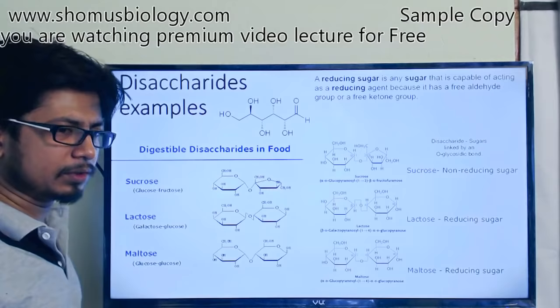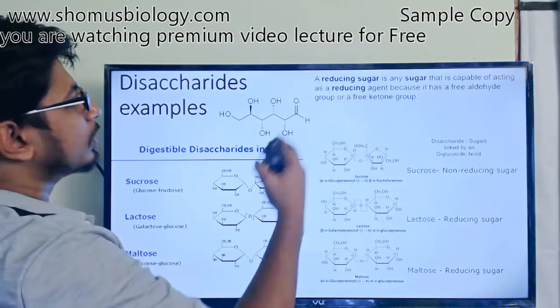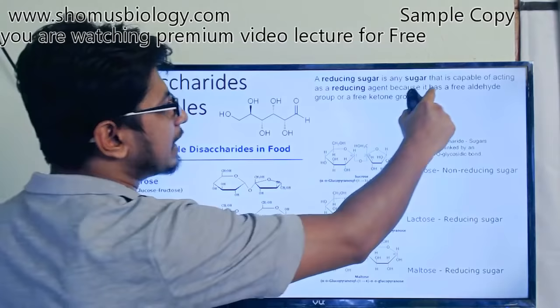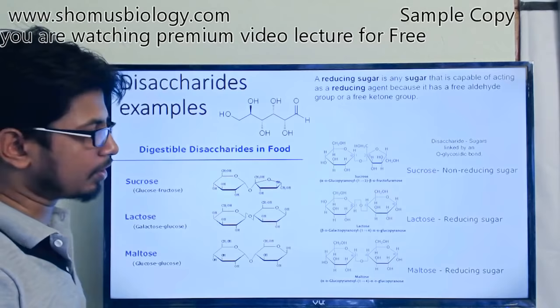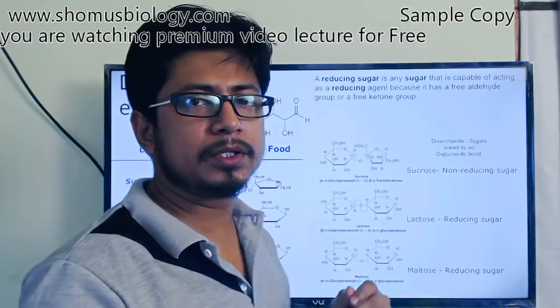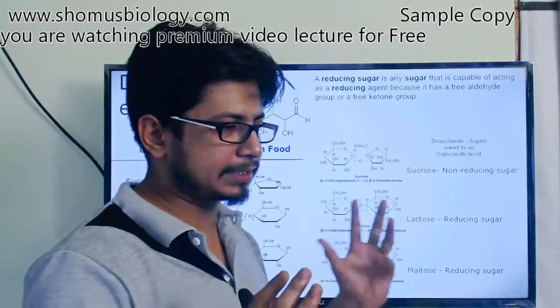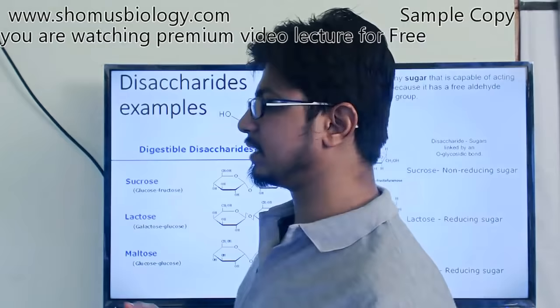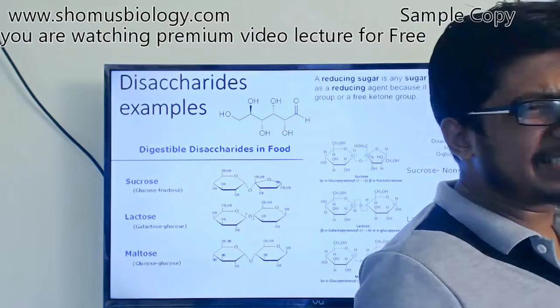Based on these linkages, we can classify sugars as reducing and non-reducing sugars. A reducing sugar is any sugar capable of acting as a reducing agent because it has a free aldehyde or a free ketone group. Sucrose, for example, is a non-reducing sugar, while lactose and maltose are both examples of reducing sugars. Generally, most disaccharides are reducing; sucrose is an example of a non-reducing disaccharide.